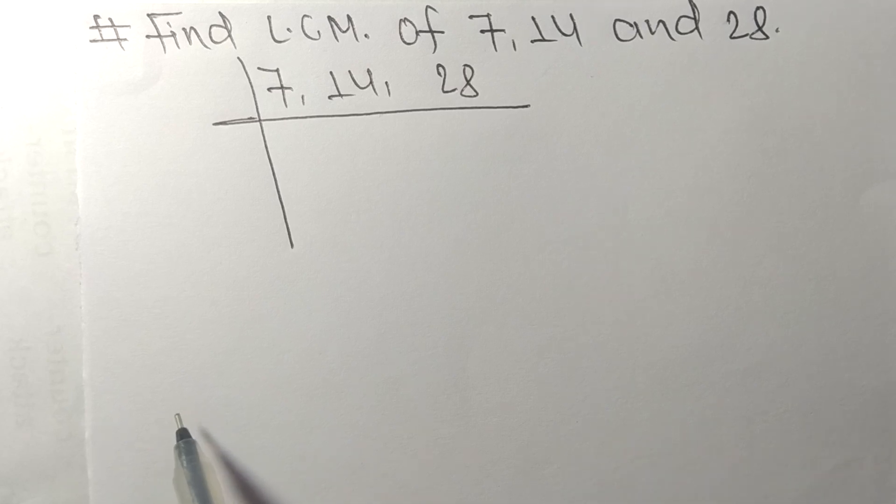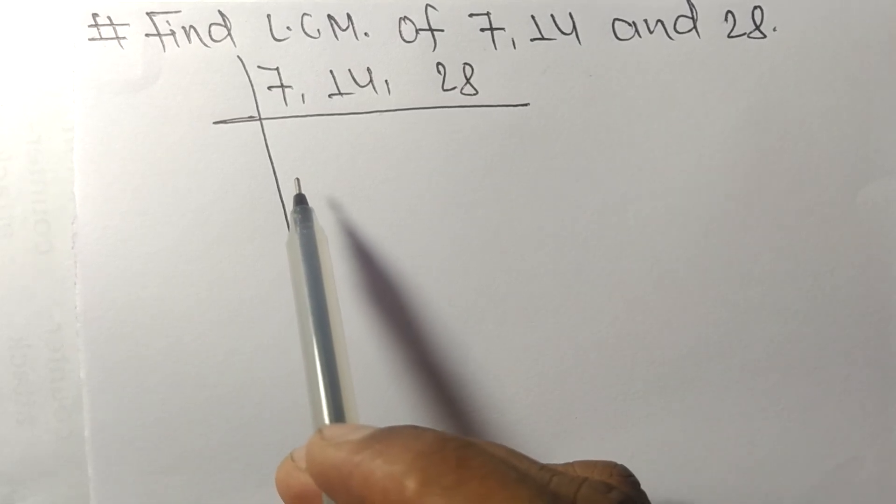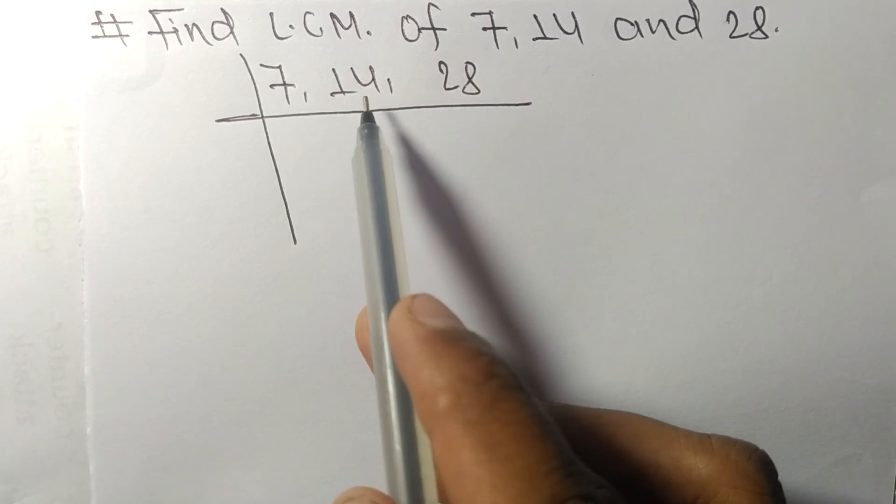To find LCM, we have to choose the lowest number that can exactly divide at least any two of these numbers.